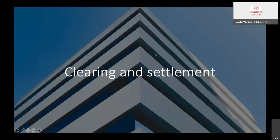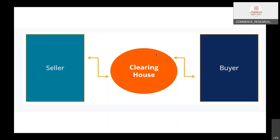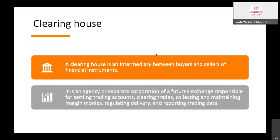Clearing and settlement involves two parties — a seller and a buyer — with a clearing house in between. The clearing house acts as a linkage between seller and buyer, and without it, the clearing and settlement mechanism does not work. The clearing house is an intermediary between buyers and sellers of financial instruments.